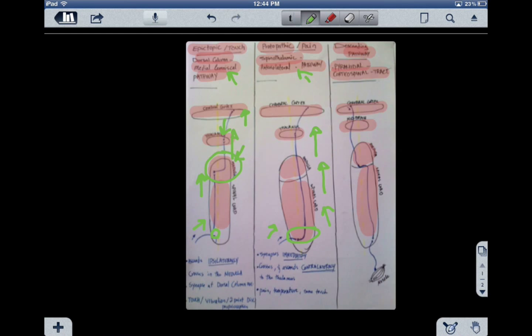Now, we're going to move on to the third pathway, which is the descending pathway, or the pyramidal corticospinal pathway. Okay, what's the major difference here? Is that we're going from up to down, rather than from down to up, because it's the motor order that comes from the cerebral cortex down to our muscle here, to make a certain movement.